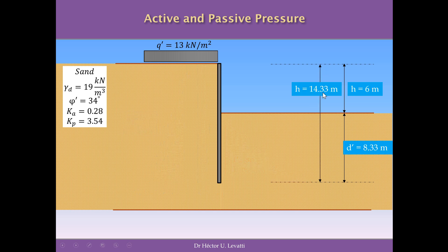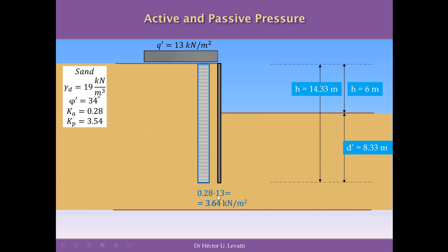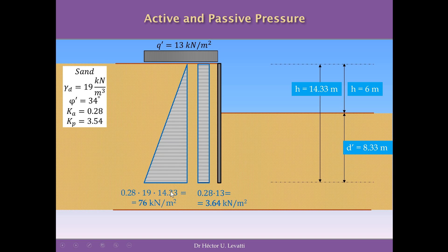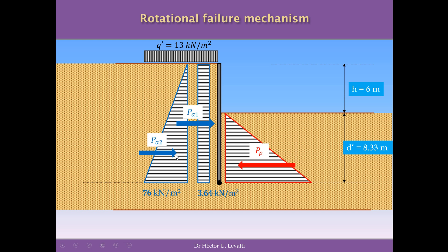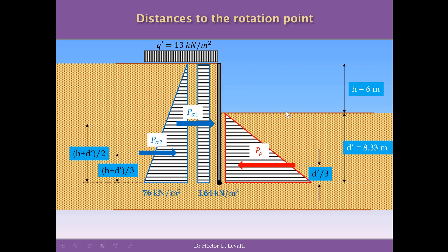The total height of the wall is 14.33 meters, the sum of H and d prime. The base of the active pressure rectangle is Ka × Q prime = 0.28 × 13 = 3.64 kN/m². The base of the active pressure triangle is Ka × γ × total height = 0.28 × 19 × 14.33 = 76 kN/m². Forces Pa1 and Pa2 act at the centroid of the rectangle and triangle respectively. The mechanism of failure is rotation around point A at the bottom of the wall, so we evaluate moments about that point, with distances 7.17, 4.78, and 2.78 meters.